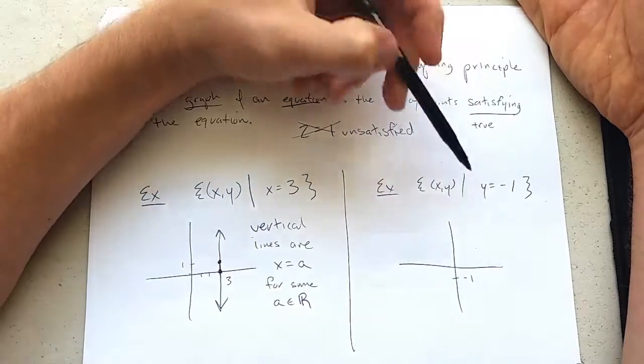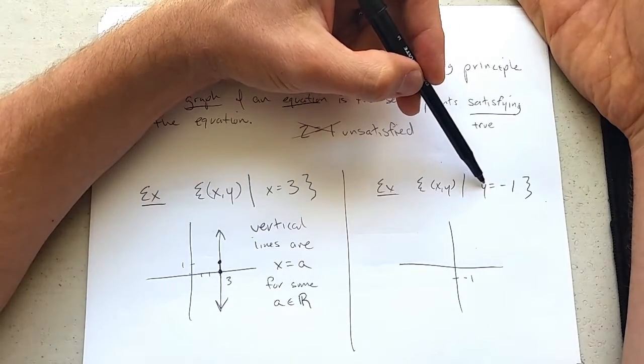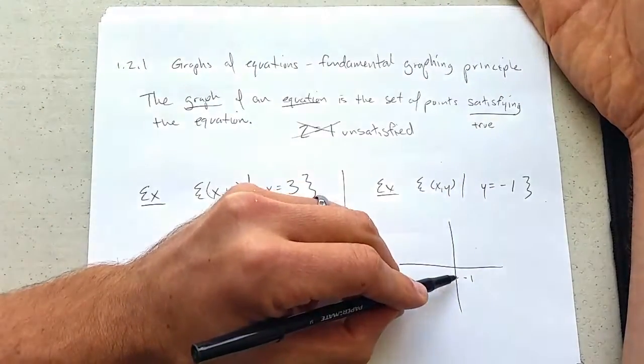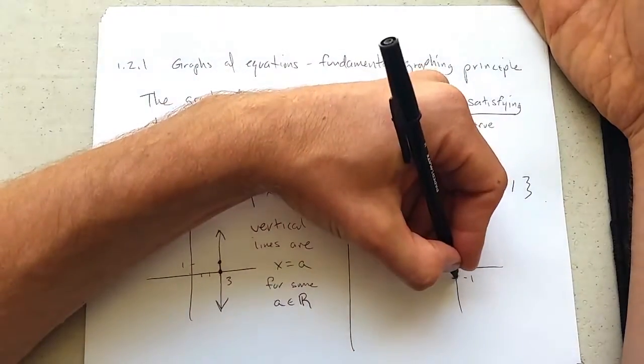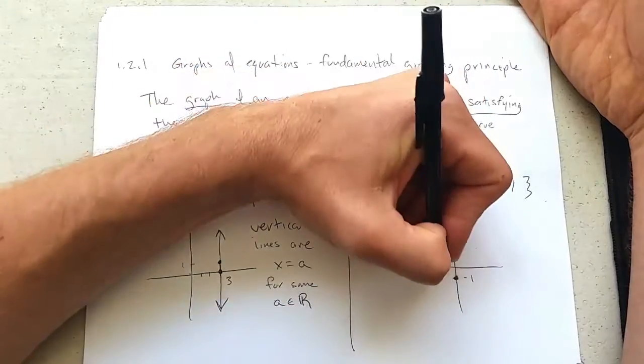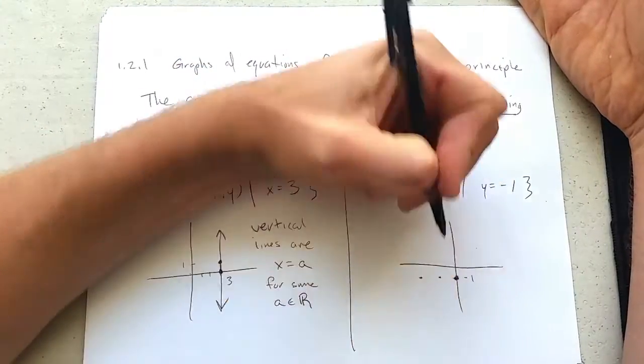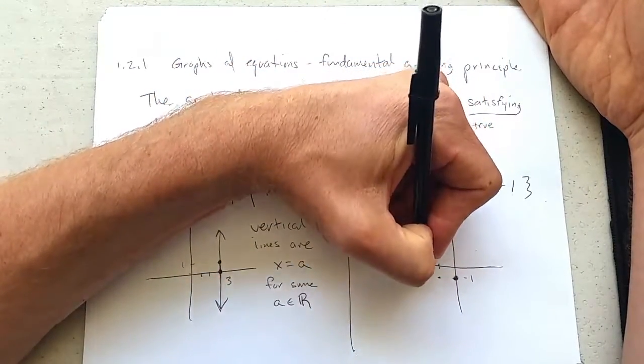But what type of points have negative 1 as our y-coordinate? Every single point that is one unit below the x-axis. So here's a point that has y-coordinate negative 1. Here's another point and another point and these will have negative x-coordinates.